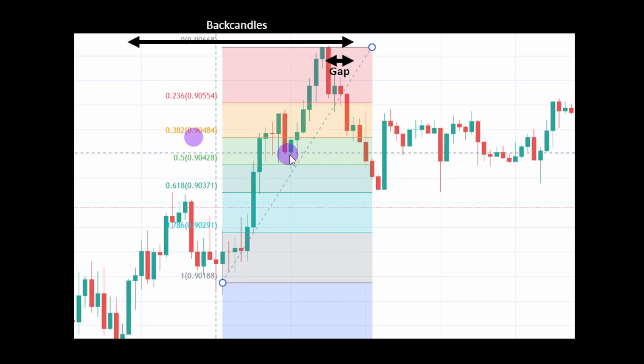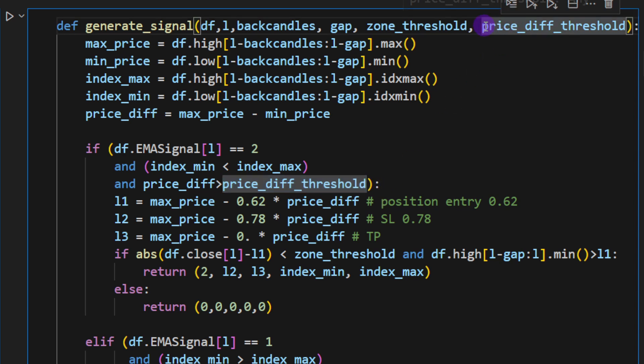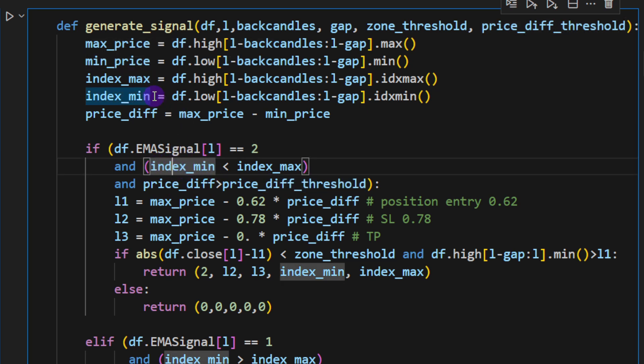The way we're going to test this: if we have an EMA signal equal to 2 (we're in an uptrend looking for a long position), we test if the index of the minimum fractal is less than the index of the maximum fractal. In other words, the minimum fractal comes before the maximum fractal. The order is important—we don't want these in reverse order unless we have a downtrend.